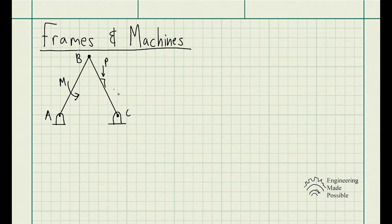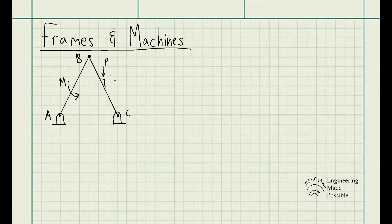Just as in the previous videos on truss analysis, we have what are called internal forces. For this example, we have pin B. We could analyze the entire structure — doing the sum of moments and sum of forces to find the support reactions — but just like the method of joints and method of sections, you could also find a specific force on one member. We could analyze the structure entirely, or split it into its members and analyze each one.